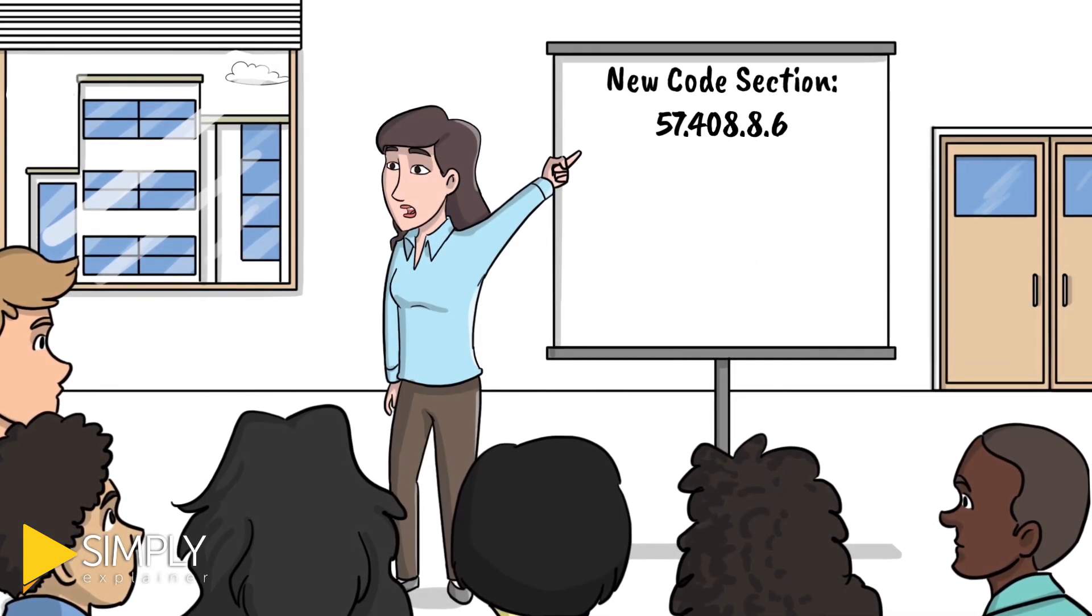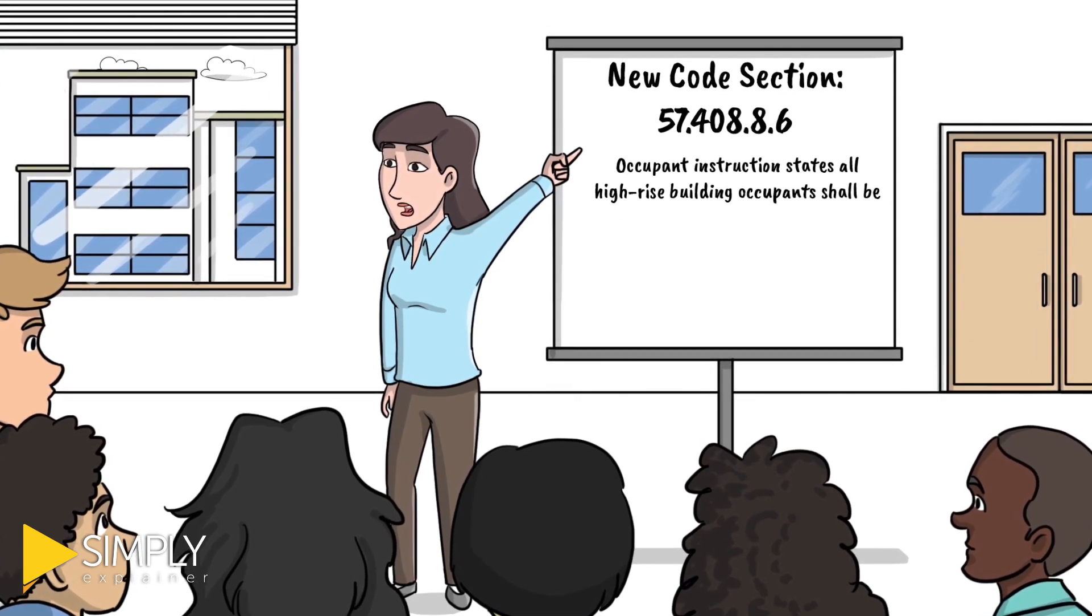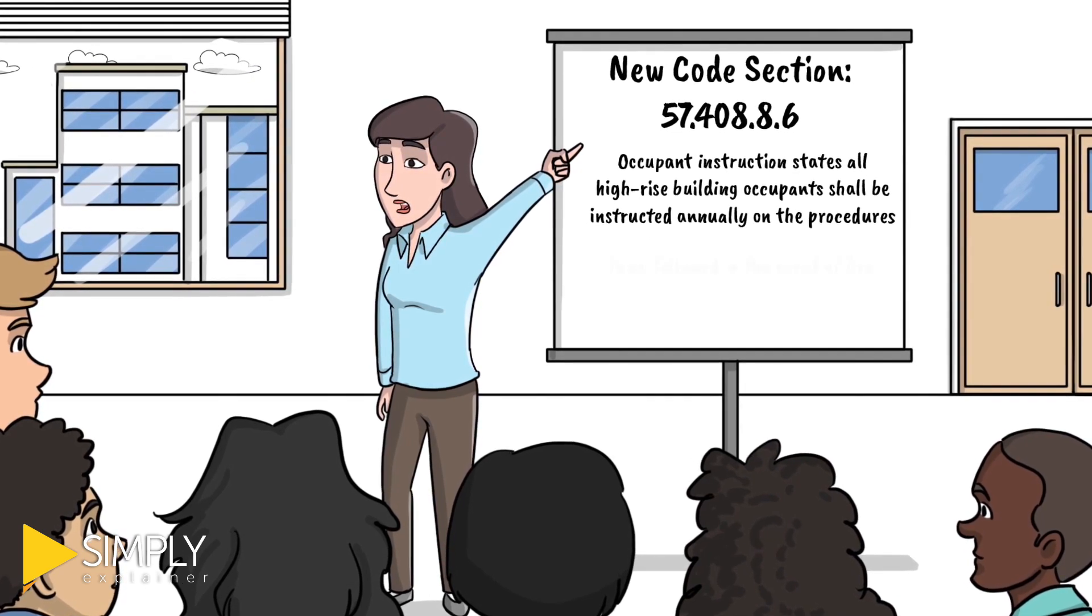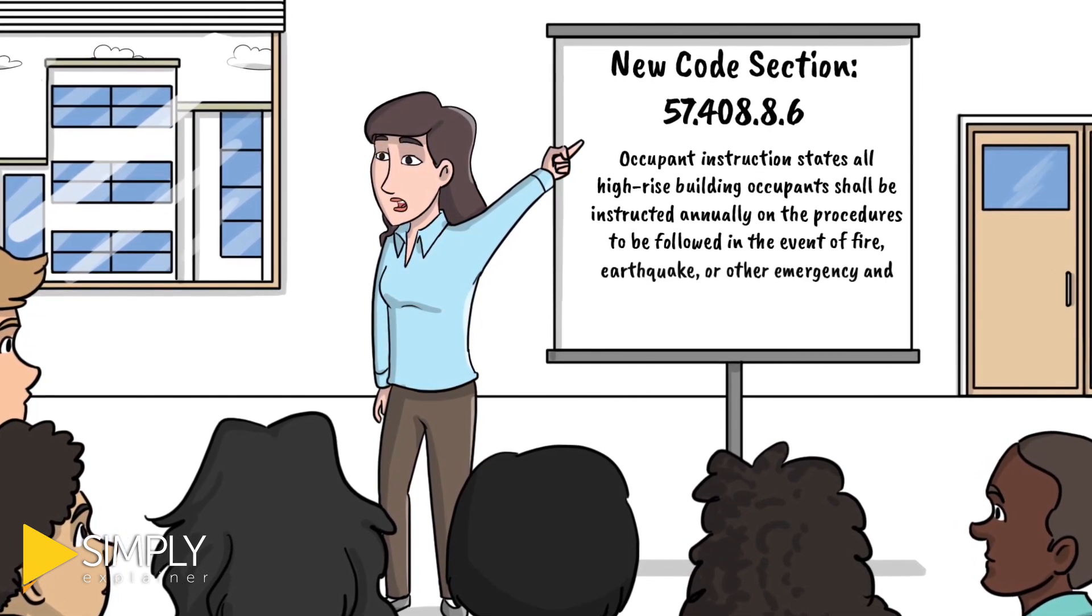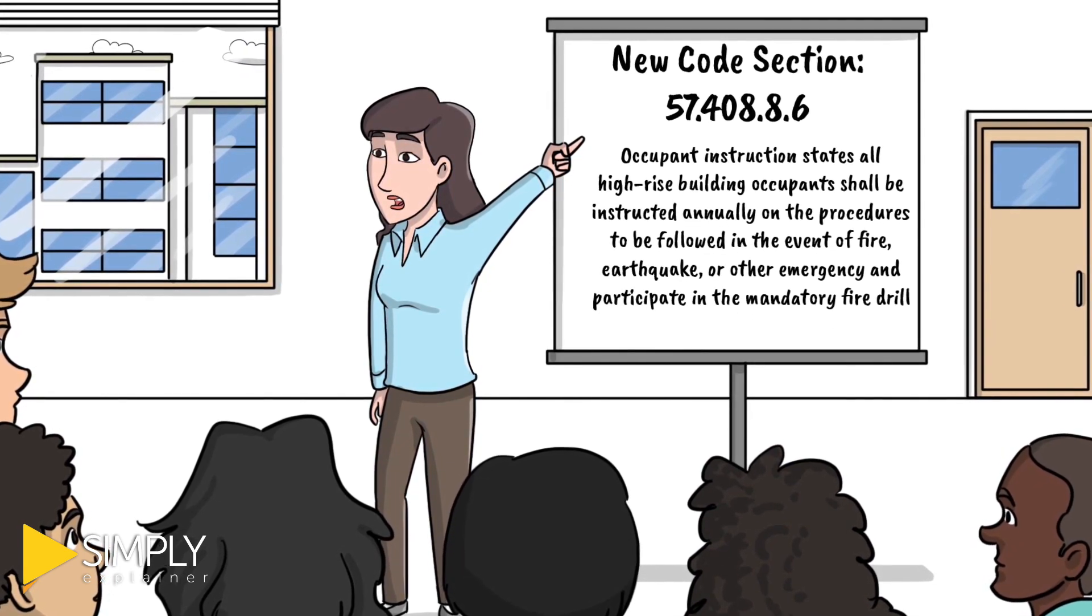New code section 57.408.8.6 states all high-rise building occupants shall be instructed annually on the procedures to be followed in the event of fire, earthquake, or other emergency and participate in the mandatory fire drill.